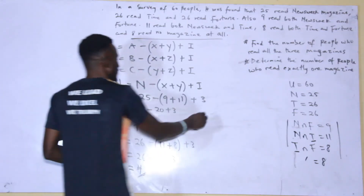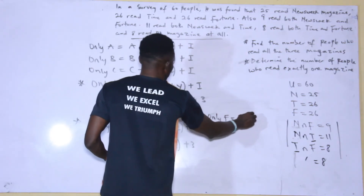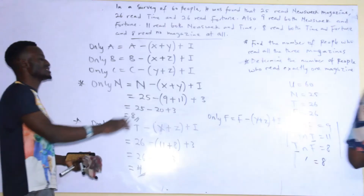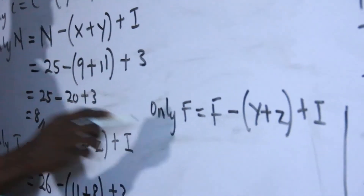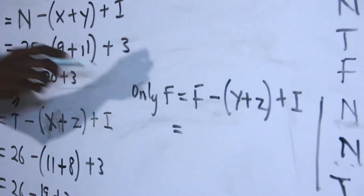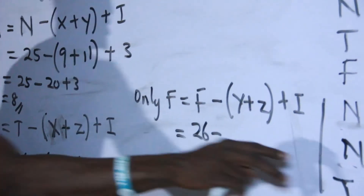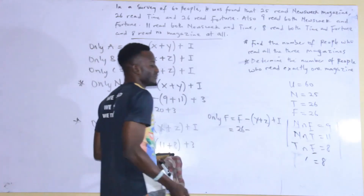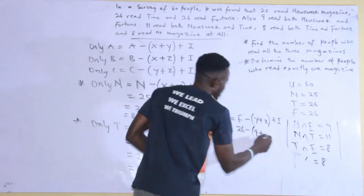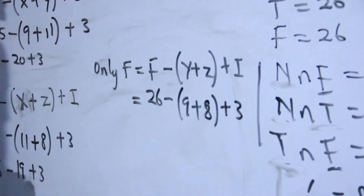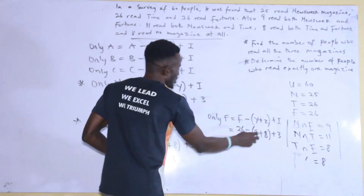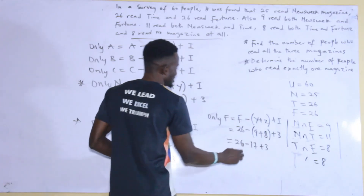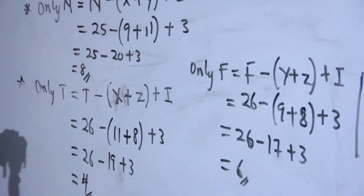Then lastly, only fortune. Only fortune equals fortune minus the pairwise intersections that contain fortune, plus the full intersection. The pairwise intersections containing fortune are: newsweek and fortune which is 9, and time and fortune which is 8. So only fortune equals 26 minus 9 plus 8, then plus 3. That gives 26 minus 17 plus 3, which equals 26 minus 20, and that equals 6.